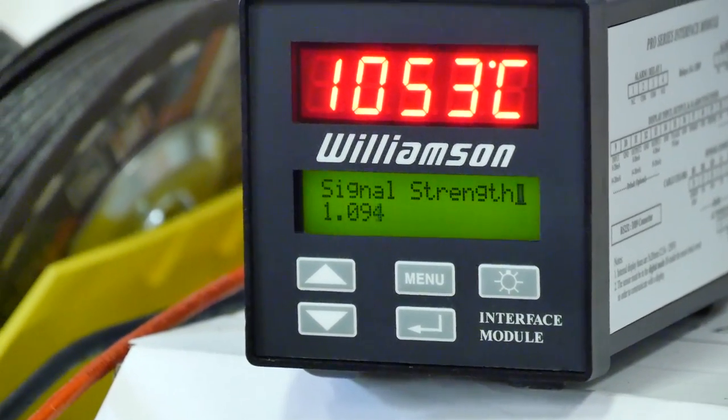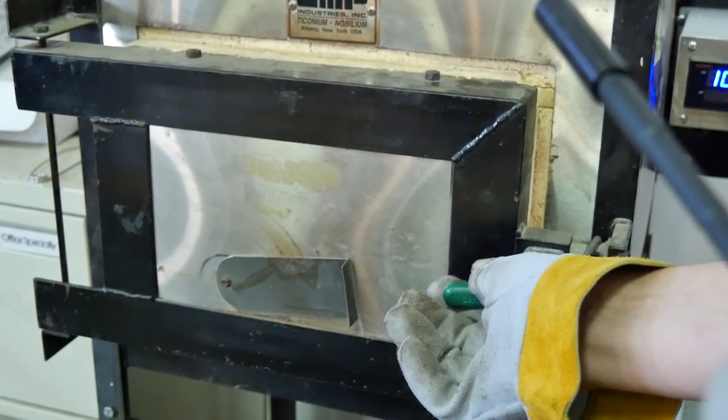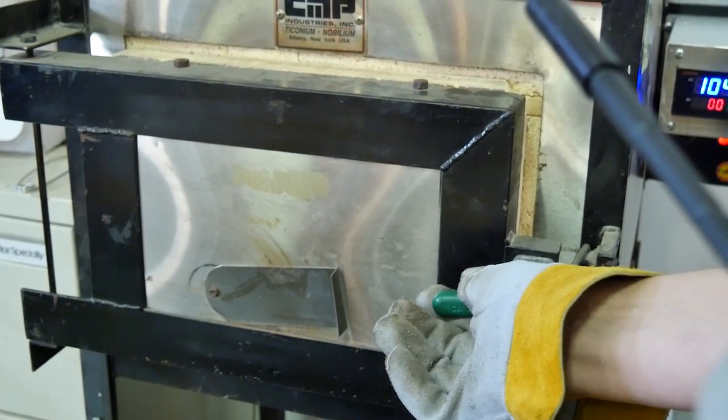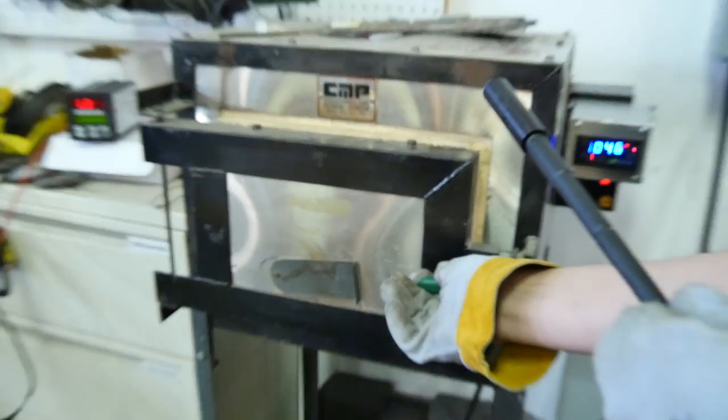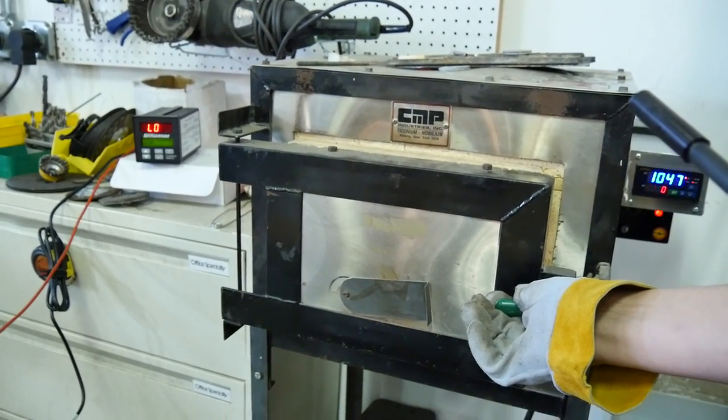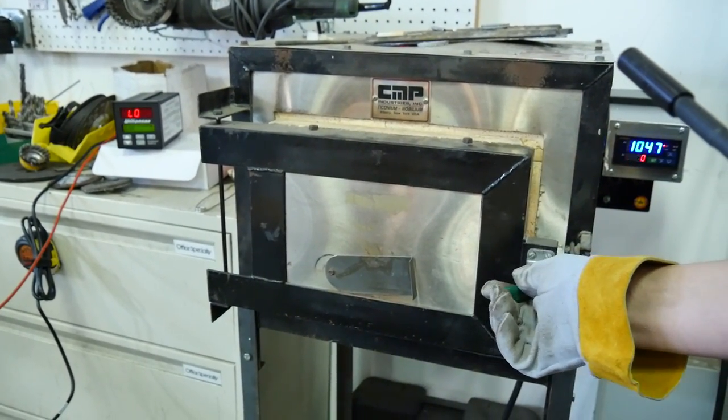So next, what I want to do is open up the kiln door and let the surface of it cool and watch as it cools and see if the emissivity drops a lot. He's going to open the door, point the Williamson probe at it, and we're going to watch what happens as it cools. So I'm going to pull out so we can see the Williamson in shot.